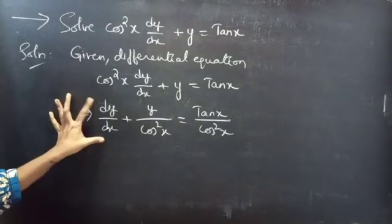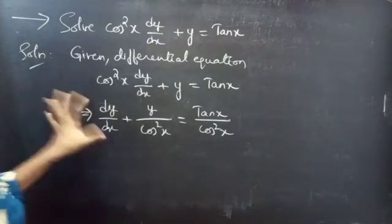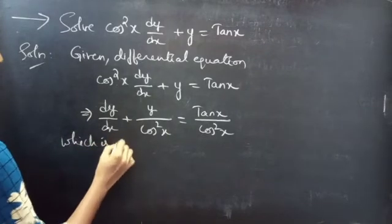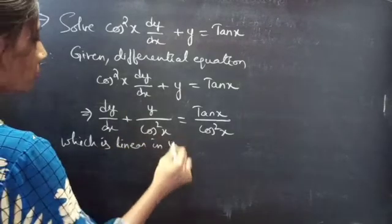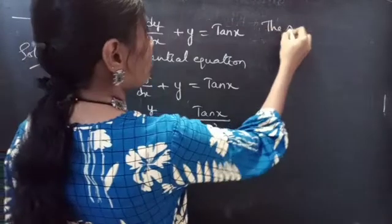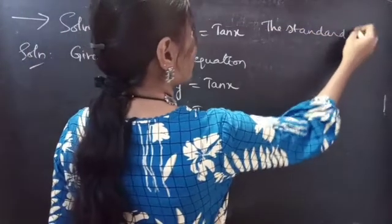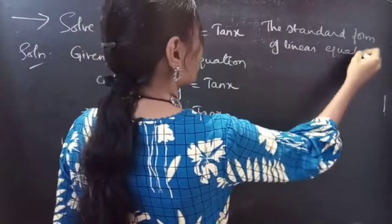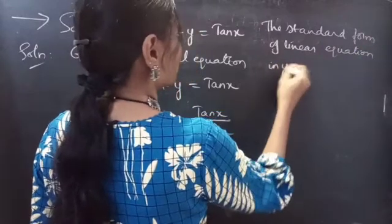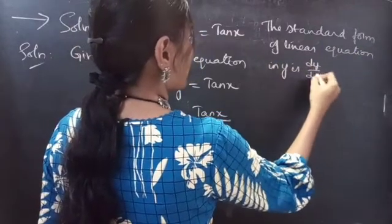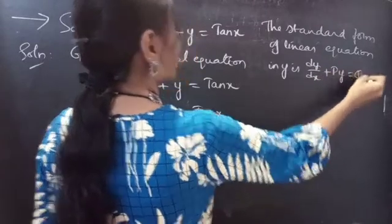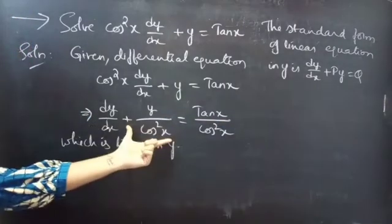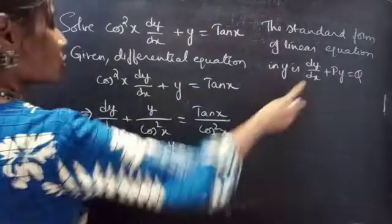Now, this is in the standard form of a linear equation in y. We know that the standard form of a linear equation in y is dy/dx + P·y = Q. So the reduced equation is of standard form of linear equation in y. Now, by comparing these two, we'll get P and Q.